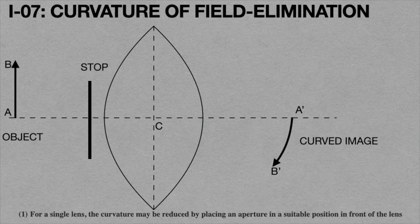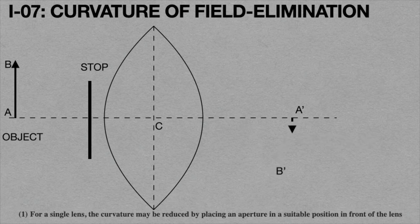As a result, the curvatureness of the image decreases and forms a straight line object. But if you use slits or stops in front of the lens, then we will get a less intense image.